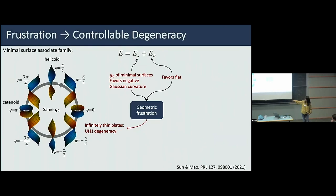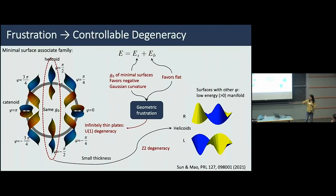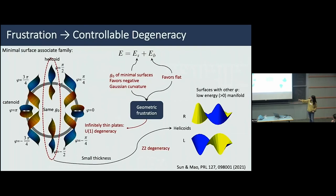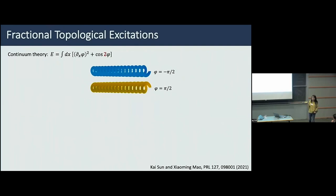To study this, we select the minimal surface associated family of helicoids and catenoids. You can have a set of different shapes of an elastic ribbon — all having the same elastic energy to leading order. This is our degeneracy, labeled by a phase angle, giving a U(1) degeneracy. Introducing a little bit of thickness provides a small energy bias along this manifold of low-energy states, so the two lowest energy states are the left-handed and right-handed helicoids. All other shapes are still in this low-energy manifold but with slightly higher energy.